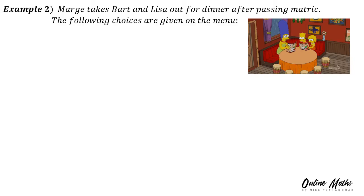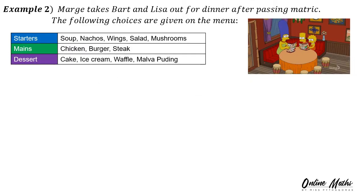Example 2. Marge takes Bart and Lisa out for dinner after passing Madrid. The following choices are given on the menu. For starters, there's a choice between soup, nachos, wings, salad, and mushrooms — so there are 5.